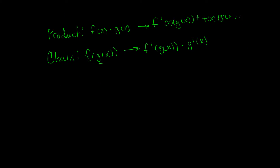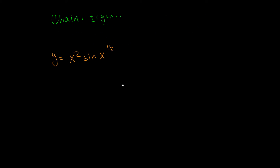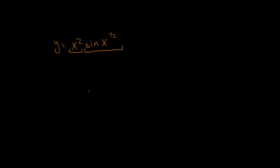Now let's take a look at this derivative. We have y equals x squared sine of x to the one-half power. This is actually two terms: x squared, and sine of x to the one-half. Because of that, I'm going to start with the product rule. So y prime equals the derivative of the first, 2x, times the second, sine of x to the one-half, plus the first, x squared, times the derivative of the second.